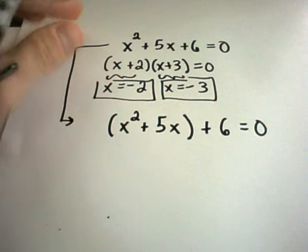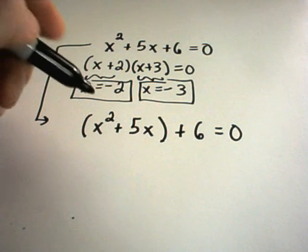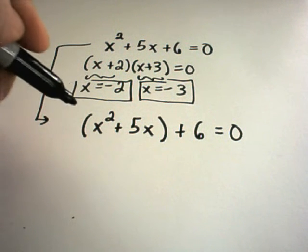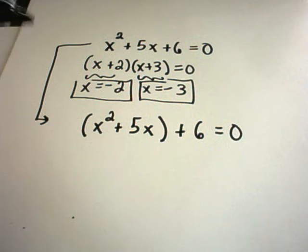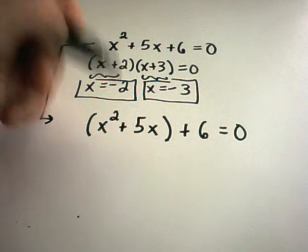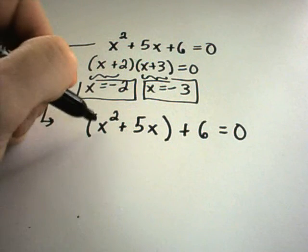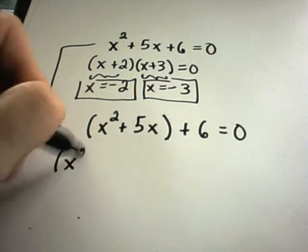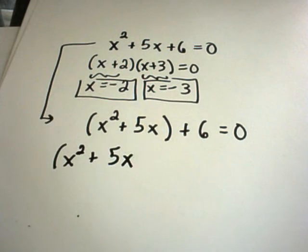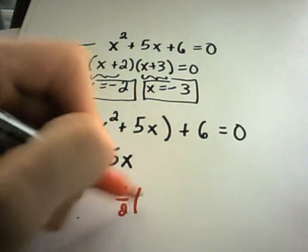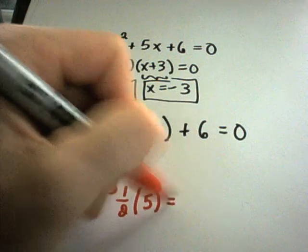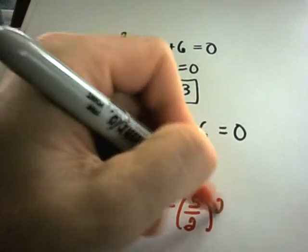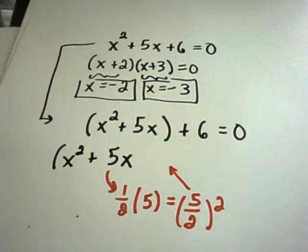I've grouped my x terms together. There's another video about completing the square and putting quadratic equations into vertex form where you can see a few more examples. First, make sure the coefficient on x squared is 1, which it is. Then you take half of the middle term — half of 5 is 5 halves — so you take one half of the number in front of the x, which gives us 5 halves, and then you square that, and that's what you plug back inside the equation.